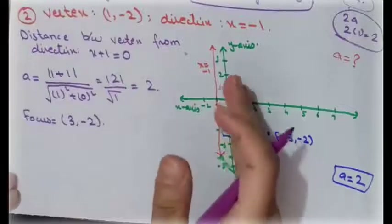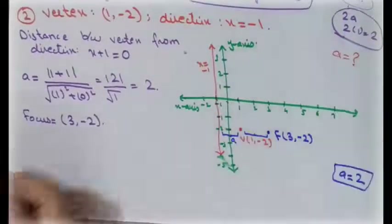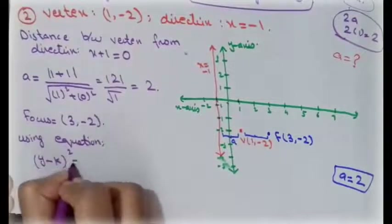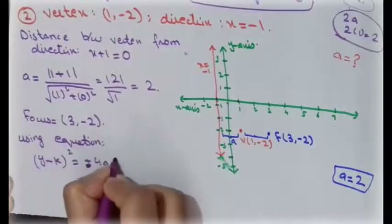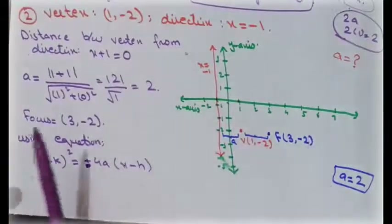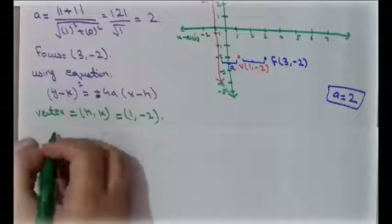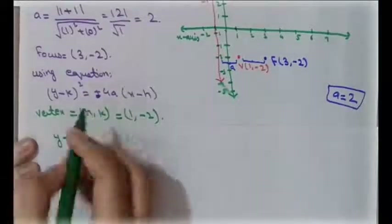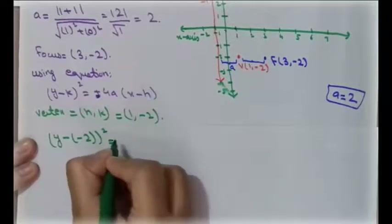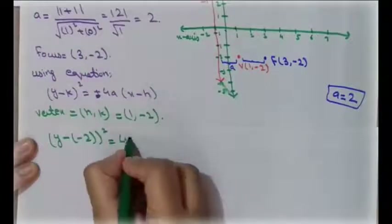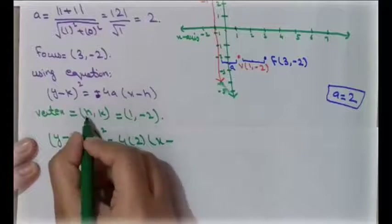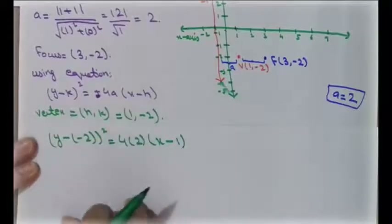Since the parabola opens to the right, we use the equation (y − k)² = 4a(x − h). The focus point is (3, −2), h = 1, k = −2, a = 2. Substituting: (y − (−2))² = 4(2)(x − 1), which gives (y + 2)² = 8(x − 1).